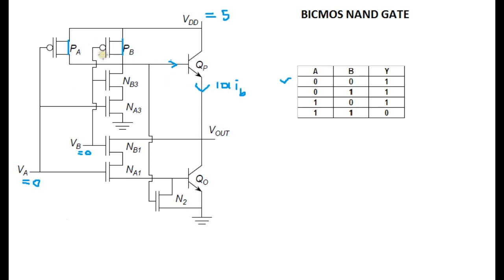Integrating both CMOS as well as BJT, we get these three advantages. Let's see what happens when we give inputs, both inputs as low - A equals 0 and B equals 0. When we say A equals 0, it means the first input VA equals 0 volts, and VB equals 0. When we apply these two voltages, these two inputs are given to NA1, NB1 and PA and PB.